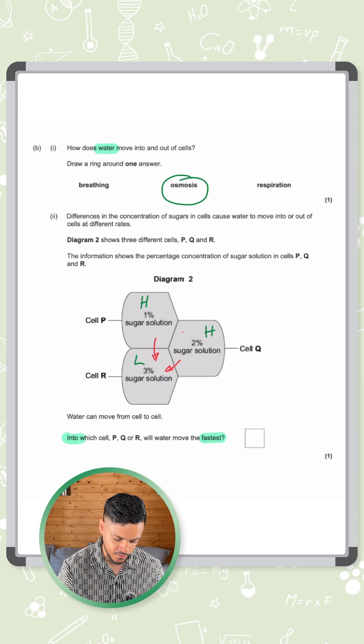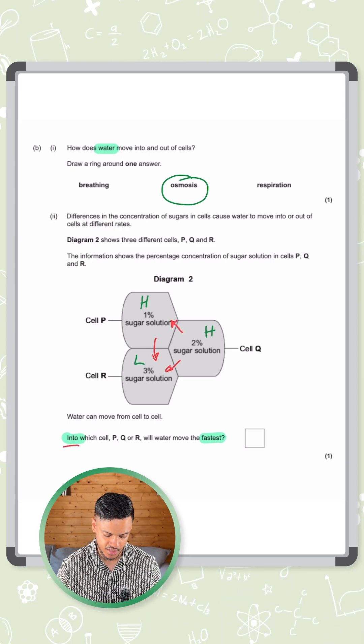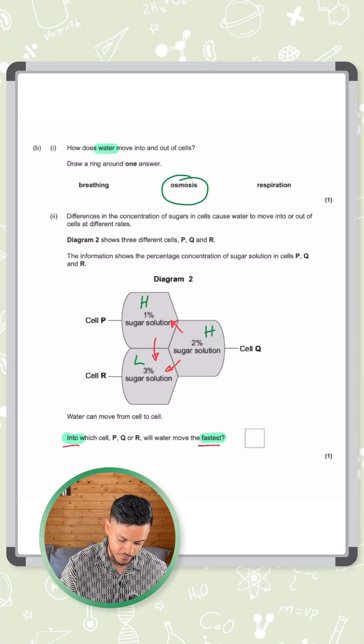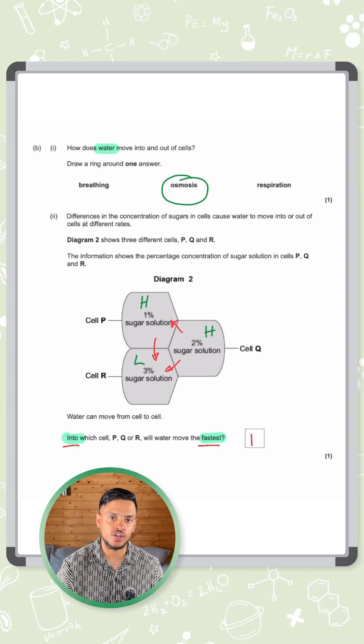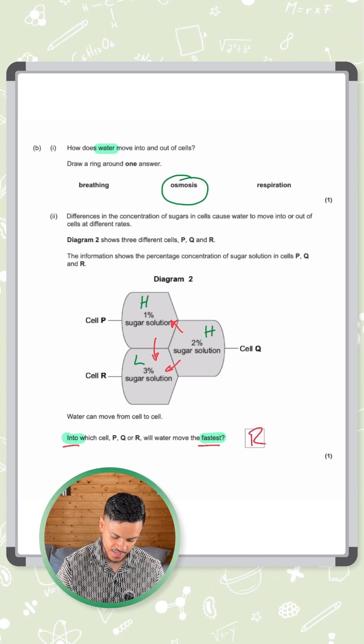You might get some water also going from the two percent to the one percent, but the question is asking into which cell will it move the fastest. That's going to be cell R because it's got the lowest water potential. So the answer here is R.